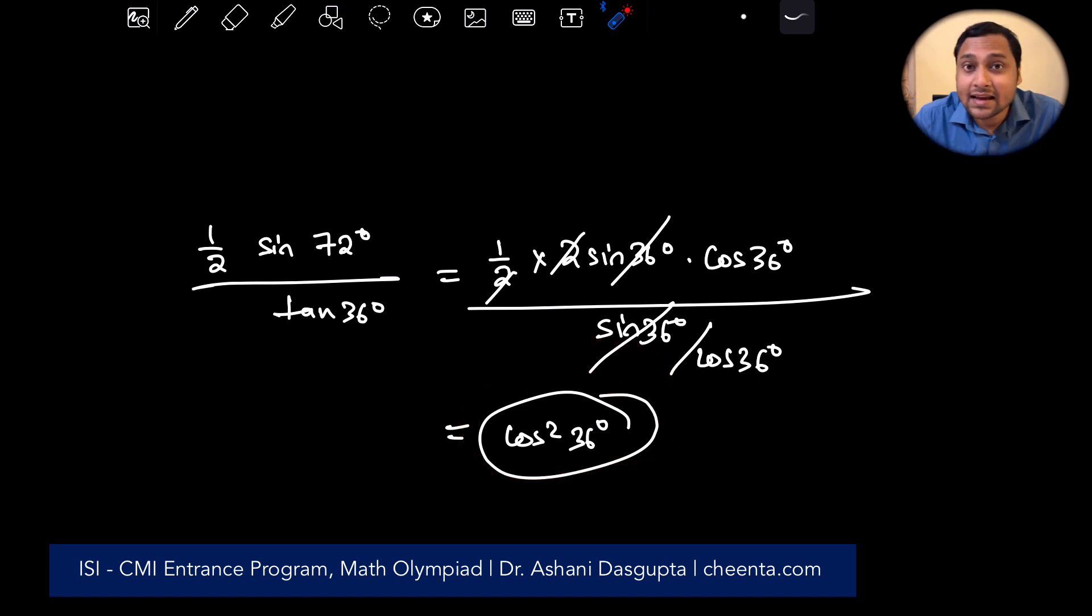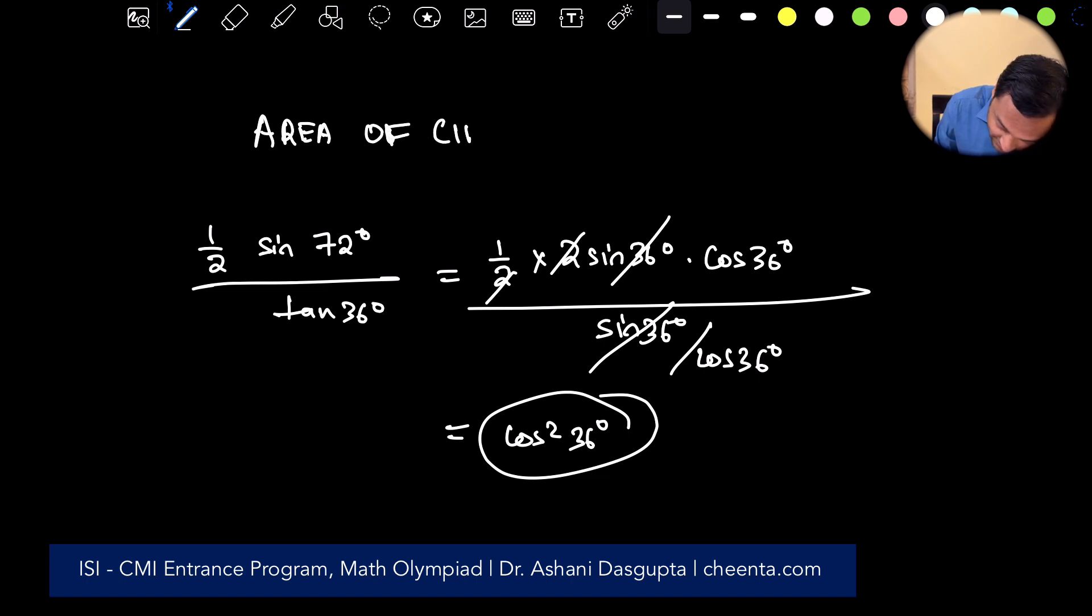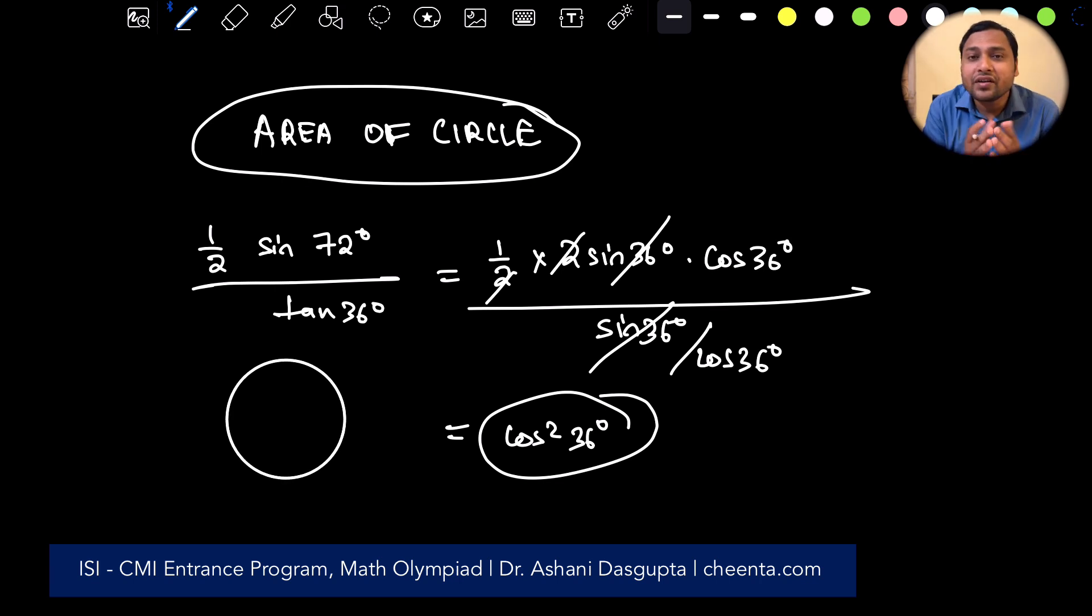But, I want to make a comment here. This is a very interesting sub-step of a much bigger problem. The much bigger problem is how do you calculate the area of the circle? Area of circle. Because human beings, when they started calculating areas, they were able to calculate formulas for rectangles, squares, triangles, polygonal shapes. Circle is difficult. How do you figure out the area of a circle?